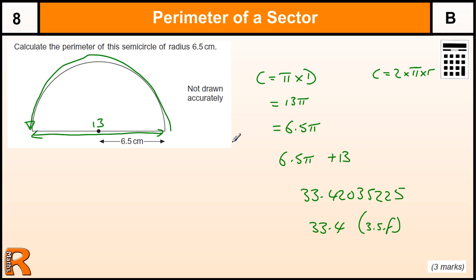Okay, so you would get one mark for something along the lines of 13 pi. And then for the half of the circumference, 6.5 pi.